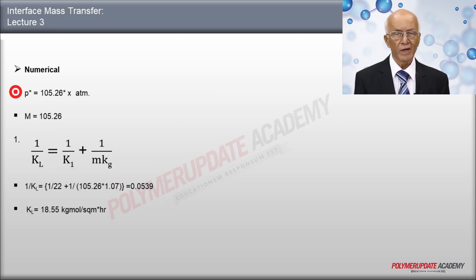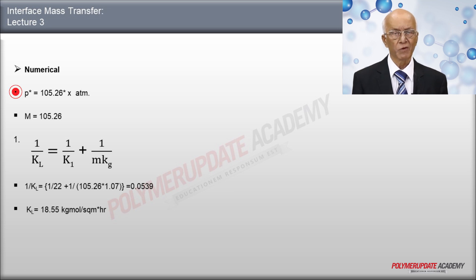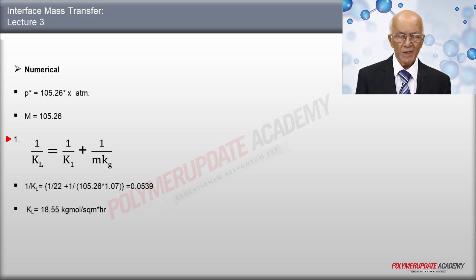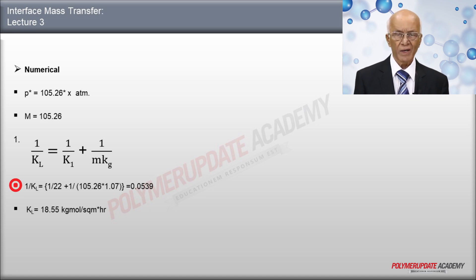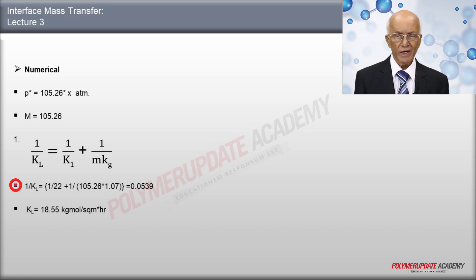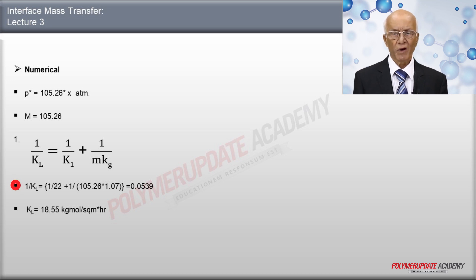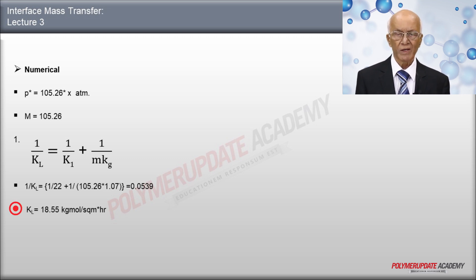Using the equation 1 over capital KL equals 1 over small kL plus 1 over (M times small kg): 1 over KL equals 1 over 22 plus 1 divided by (105.26 times 1.07), giving 0.0539. Therefore, capital KL equals 18.55 kg-mole per square meter per hour.